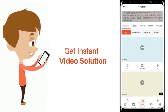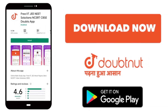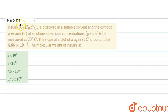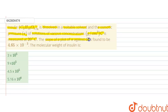The question is: insulin (C₂H₅N)ₙ is dissolved in a suitable solvent and the osmotic pressure phi of the solutions of various concentrations in gram per centimeter cube, that is c, is measured at 20 degrees Celsius. The slope of a plot of phi against c is found to be 4.65 × 10⁻³. The molecular weight of insulin is to be determined.